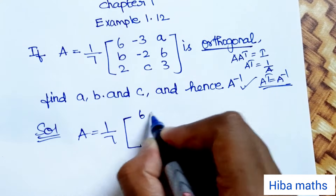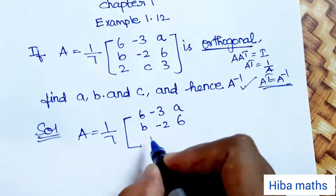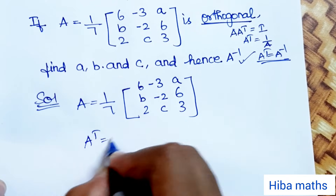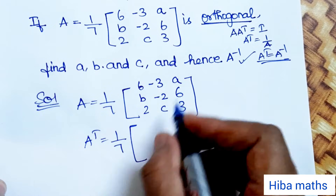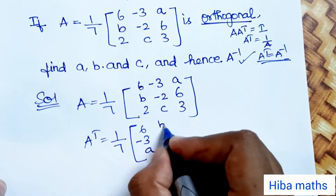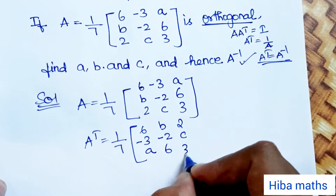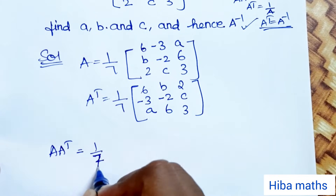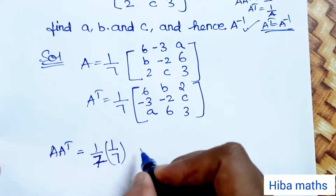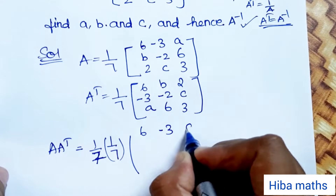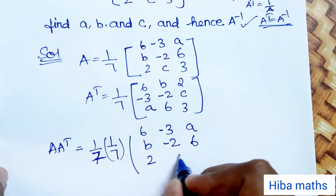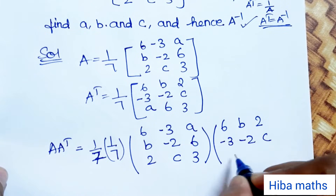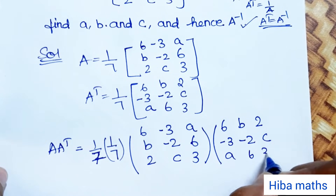Given A equals 1 by 7 times [6, -3a, b; -2, 6, 2; c, 3, ...]. Now computing A into A transpose: 1 by 7 times 1 by 7, multiplying the matrix by its transpose. A transpose has columns [6, b, 2], [-3, -2, c], [a, 6, 3].